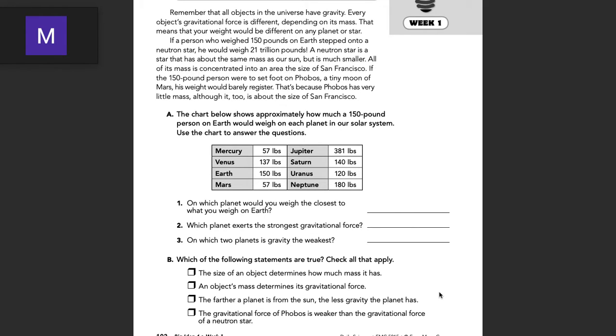The fourth statement, the gravitational force of Phobos is weaker than the gravitational force of a neutron star. We can pull that from the reading here in the second paragraph. If you've read, you guys know that that should be accurate or true, so you would check off on that last statement as well. So for B, you would check off on the second and fourth statements.